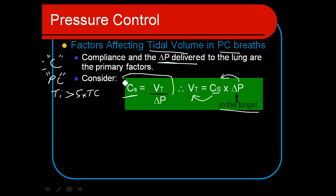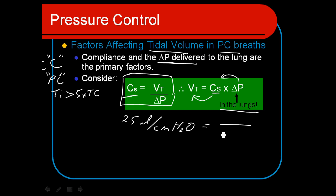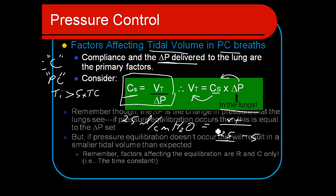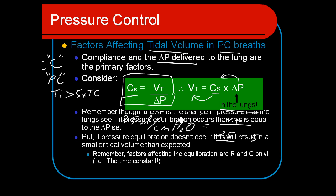This equation is important to know. For example, with a patient compliance of 25 mL/cmH₂O, a pressure control of 25 with a PEEP of 5 gives a delta P of 20 — from this you can calculate the expected tidal volume. However, this depends on equilibrium occurring. If pressure equilibrium doesn't occur due to insufficient TI, the result will be a smaller tidal volume than expected, and we won't know exactly how much pressure is entering the lungs.